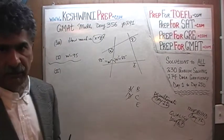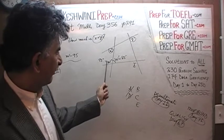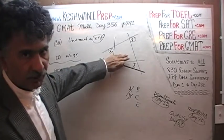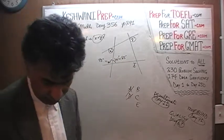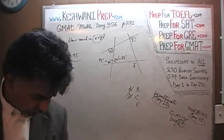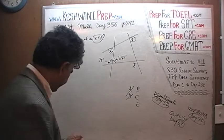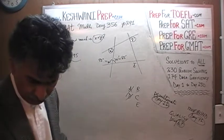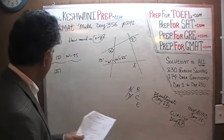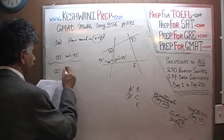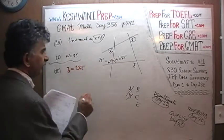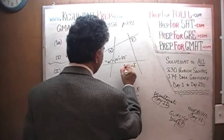When we look at the second statement, I should ignore the work from statement one — just ignore it. Let's do statement 2 in red color to keep them separate. Statement 2 tells us that z is equal to 125. Z is right here — z is 125.